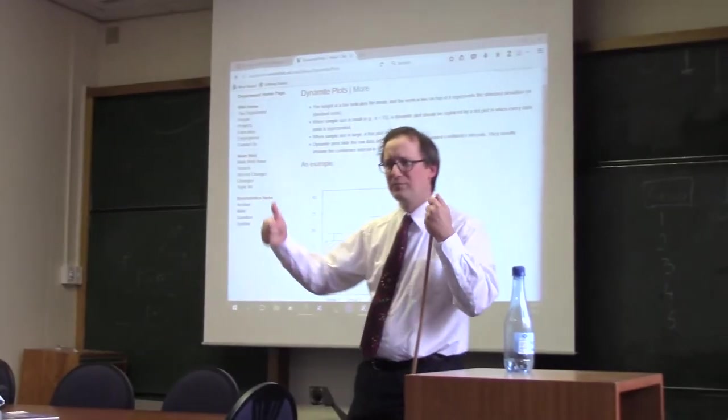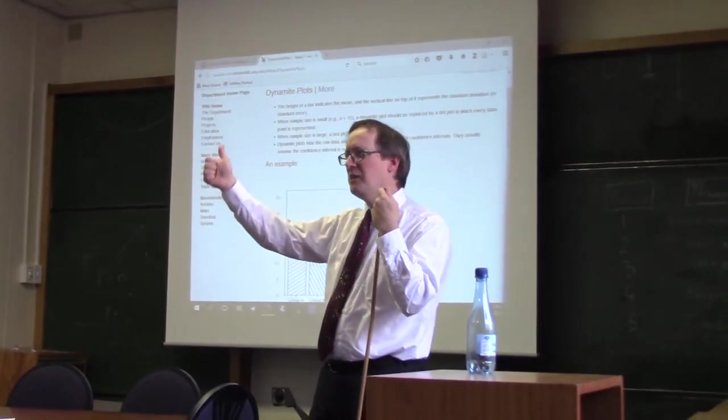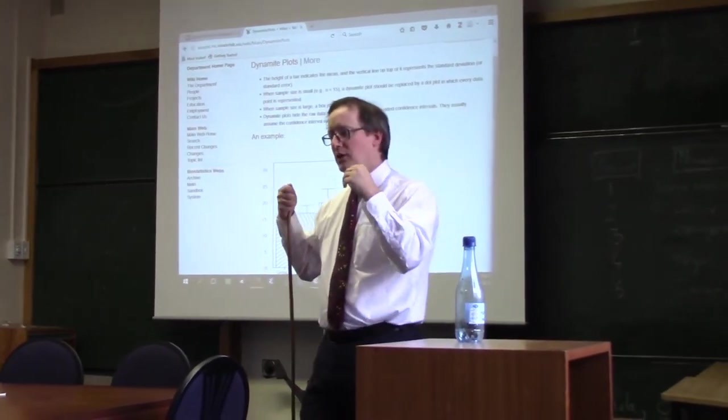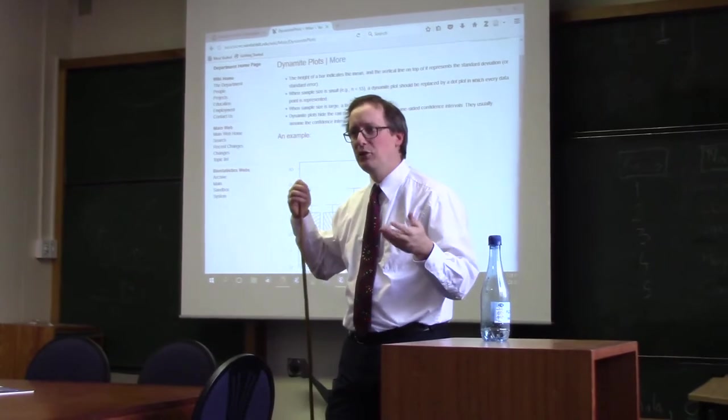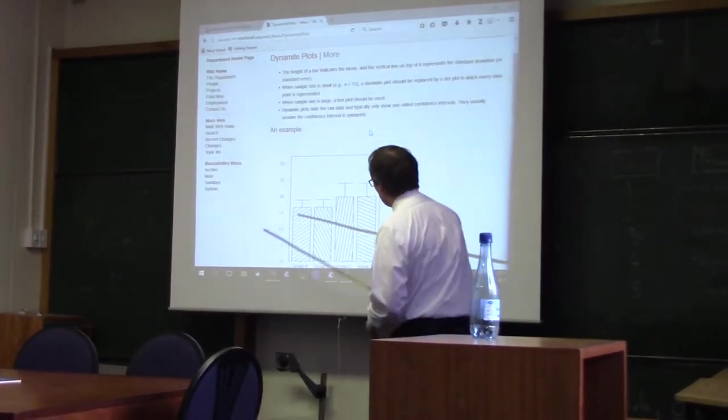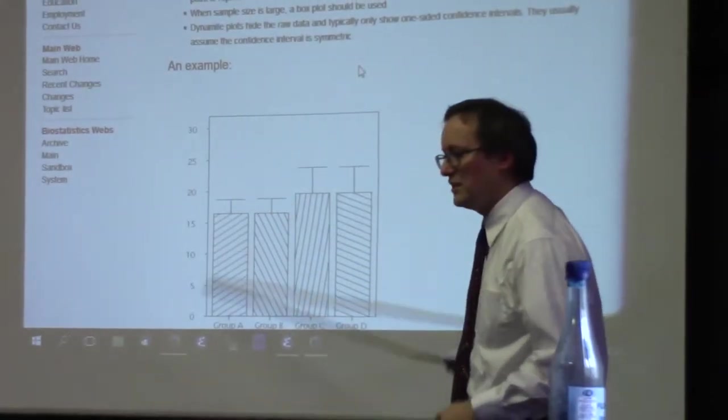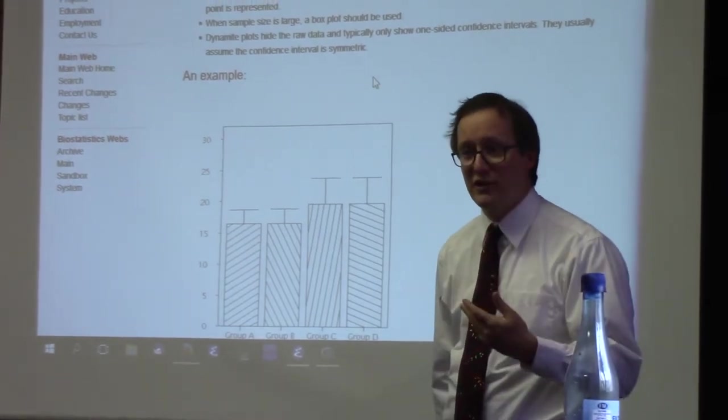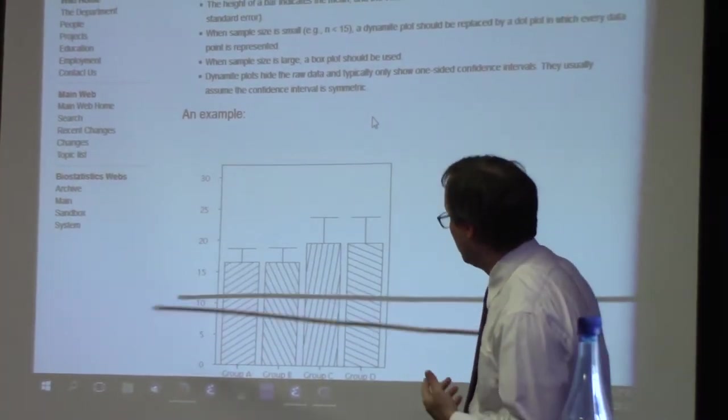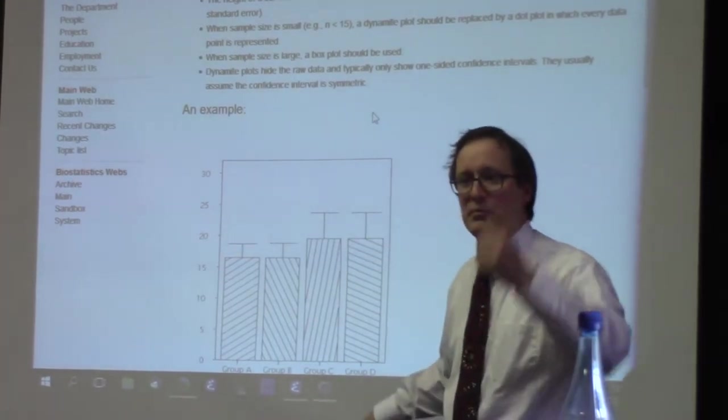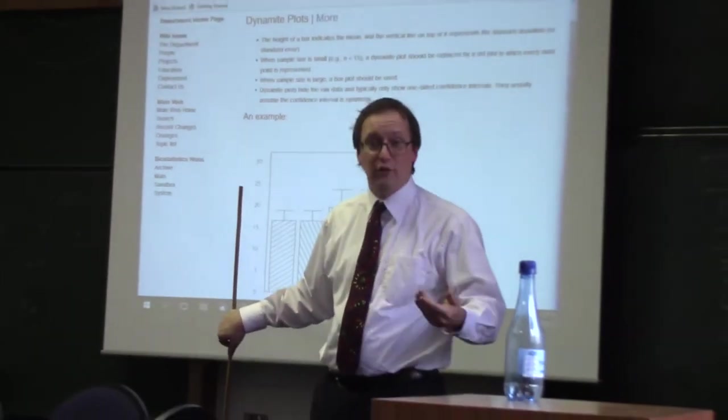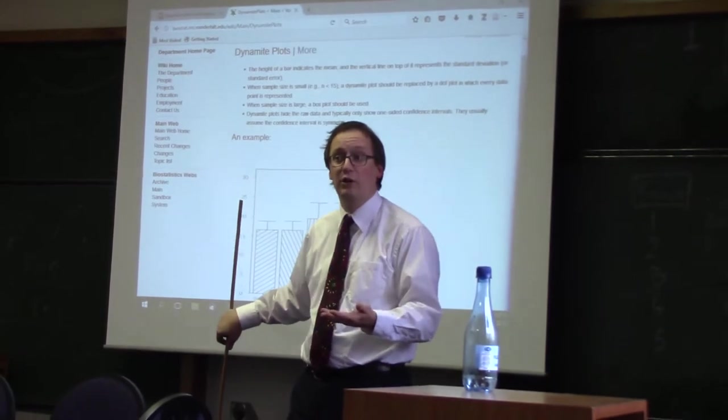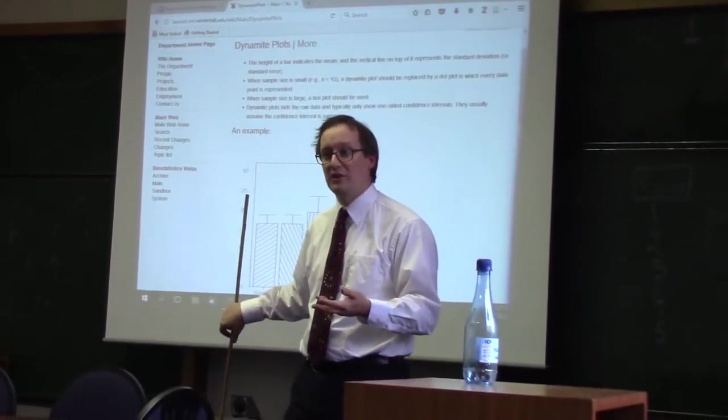Then we have a whisker sticking up. So we have a whisker showing the upward bound of something. Frequently, this is an effort to estimate the population mean based on a sample. So you may see an upper whisker representing a 95% confidence interval. Sometimes people are showing the distribution of their data by using a standard deviation. So this upward whisker represents a standard deviation up.